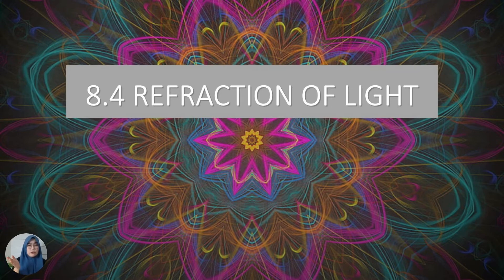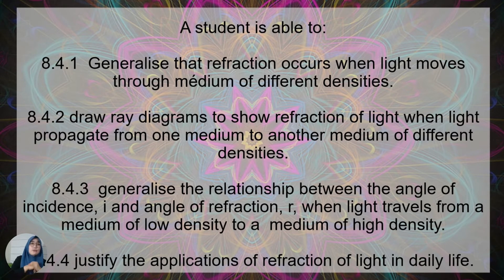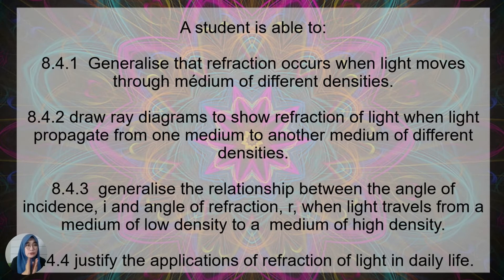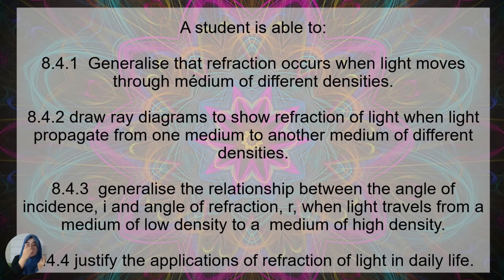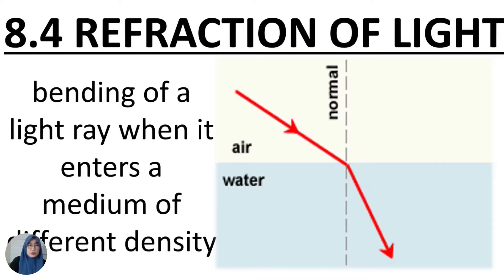Today we will cover 8.4, which is refraction of light. From this subtopic, a student is able to: one, generalize that refraction occurs when light moves through media of different densities; two, draw ray diagrams to show refraction of light when light propagates from one medium to another of different densities; three, generalize the relationship between the angle of incidence and angle of refraction when light travels from a low density to a high density medium; and four, justify the application of refraction of light in daily life.